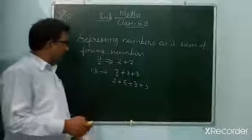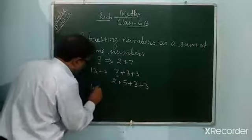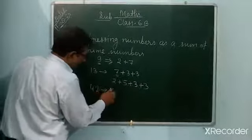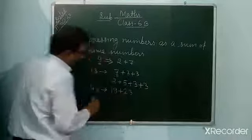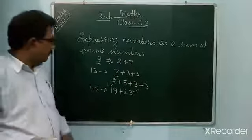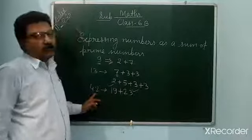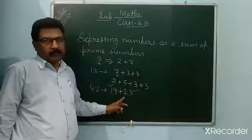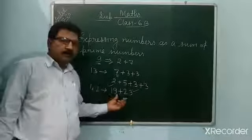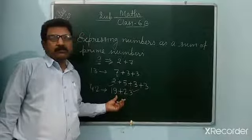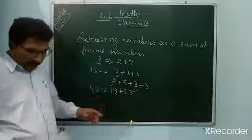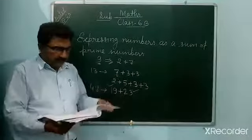Like, if the number given is 42, you can take the sum 19 plus 23. See, 19 is also a prime number and 23 is also a prime number. So you must break 42 as prime numbers and take their sum. 19 plus 23 equals 42. Like this, you can do these examples.